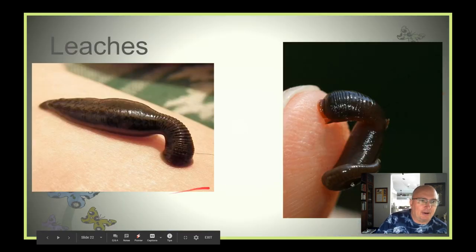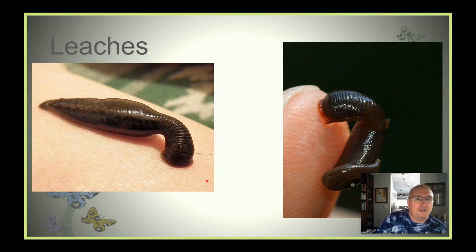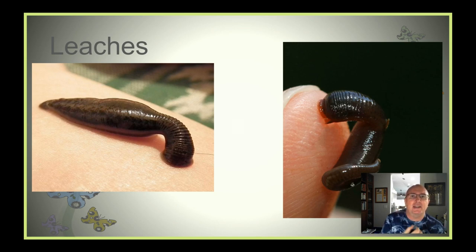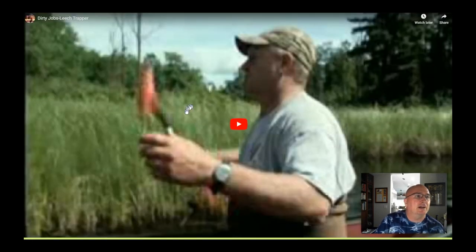Now, leeches. We've all heard of leeches. They attach to animals and humans and suck blood. They do this by producing a couple of chemicals: one is an anesthetic so you can't feel them latching onto you, and the second is a blood thinner to make it easier to pull the blood out of whatever host they're attached to. Not all leeches are blood suckers, but some of them are. Here's a video from Dirty Jobs.